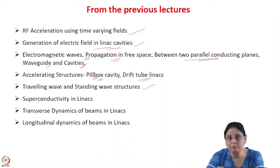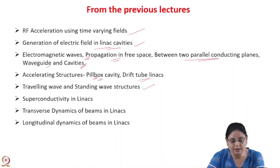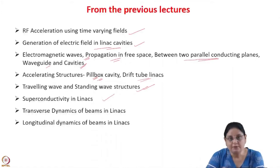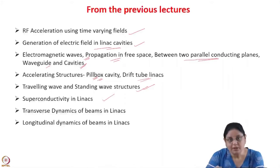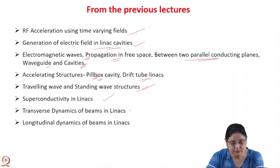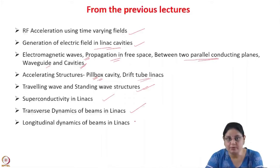How a hollow uniform waveguide cannot be used for acceleration, and if you load it with periodic obstacles, the phase velocity in the loaded structure is brought down and then that can be used for acceleration. We also learnt about periodic standing wave structures, learnt about superconductivity in linacs, and how in normal conducting linacs the RF power dissipation is very high. So the efficiency of transfer of power from the cavity to the beam is very low in a normal conducting linac — most of the power is dissipated as heat in the walls. By using superconducting structures, we can transfer the entire power into the beam.